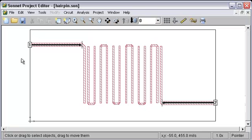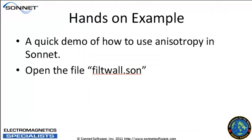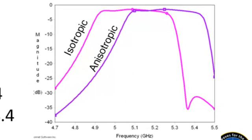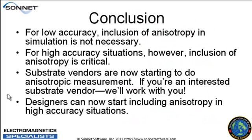If you have the data, there's really no good reason not to use anisotropy. Here are results for another filter using actual extracted alumina data. The pink is isotropic simulation based on a datasheet value, and the purple is anisotropic permittivity as extracted by this technique. This is a case where anisotropy could easily break the design. In conclusion, for low-accuracy work it may not be critical, but for high-accuracy situations the inclusion of anisotropy is absolutely critical.